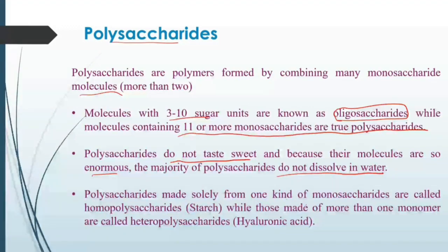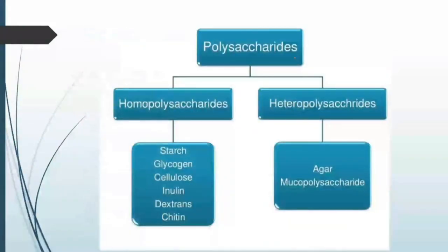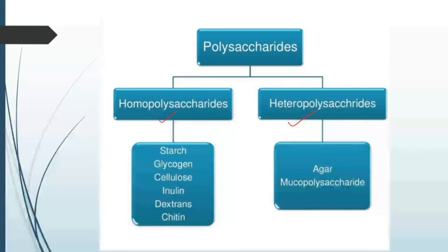Polysaccharides made solely from one kind of monosaccharide are called homopolysaccharides, while those made from more than one type of monomer are called heteropolysaccharides. If a structure is made up of glucose only, it is termed a homopolysaccharide; if it combines more than one type of monosaccharide, it is a heteropolysaccharide. Examples of homopolysaccharides: starch, glycogen, cellulose, inulin, dextrins, and chitin. Examples of heteropolysaccharides: agar and mucopolysaccharides.